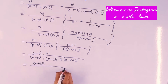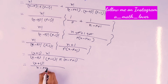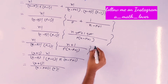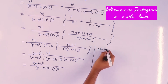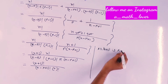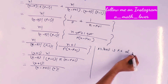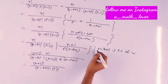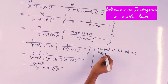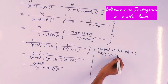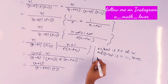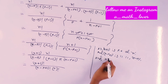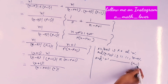So this equals to n factorial by (n minus r plus 1) factorial times r factorial. Since n plus 1 is the previous number factor of n, n minus r plus 1 is the previous number factor of n minus r, and r is the previous number factor of r minus 1.